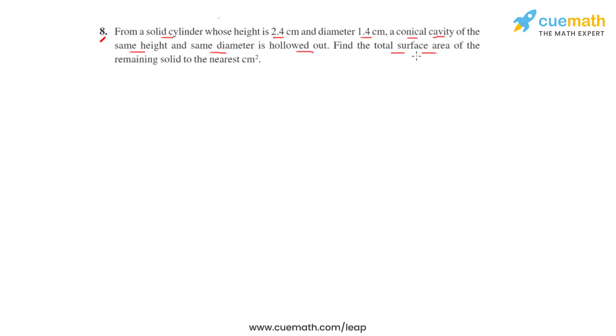Now we have to find the total surface area of the remaining solid to the nearest centimeter square. We can create the figure as per the given information in the question, and this is how the figure will look like. As we have already discussed, the conical cavity of the same height and diameter as the solid cylinder will be scooped out or hollowed out.